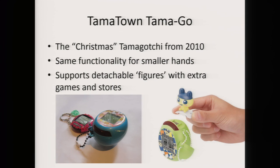And how do they do this? Well, the newer versions have an infrared interface. So if you have two Tamagotchis, you can hold them together and they'll talk to each other — they can become friends or even get married. The specific Tamagotchi version I looked at is called the Tamatown Tamago, and it's the Christmas Tamagotchi from 2010. I just recently updated my slides from saying 'last year' because I'm in denial about how long I've spent on this project.